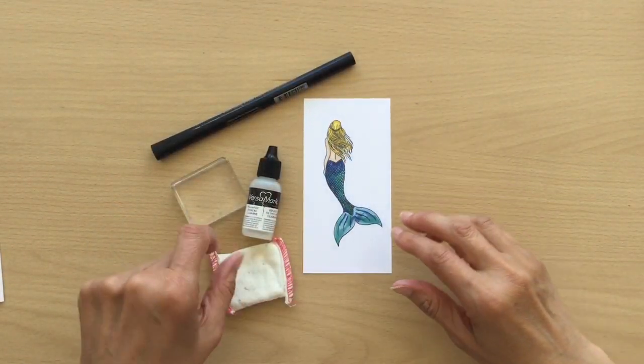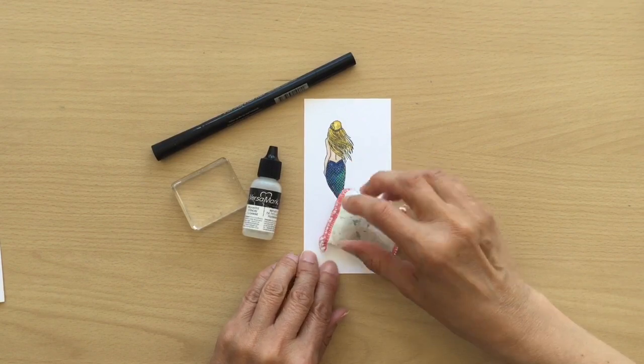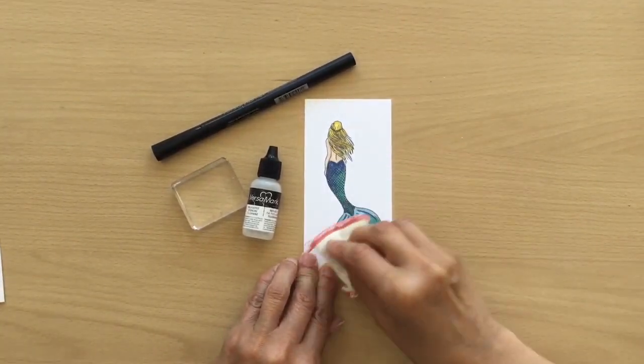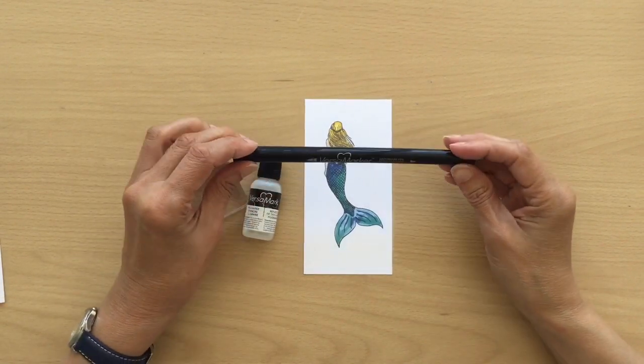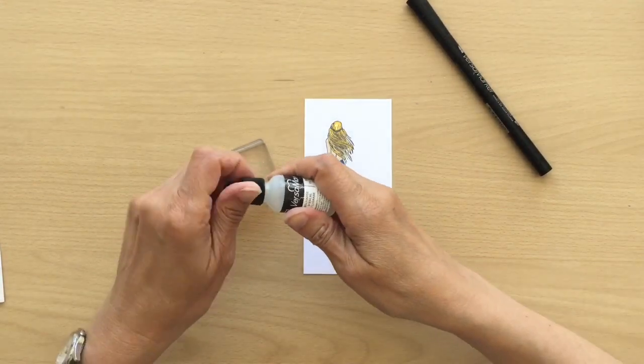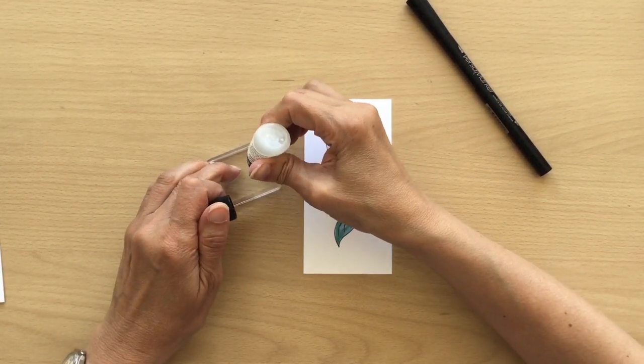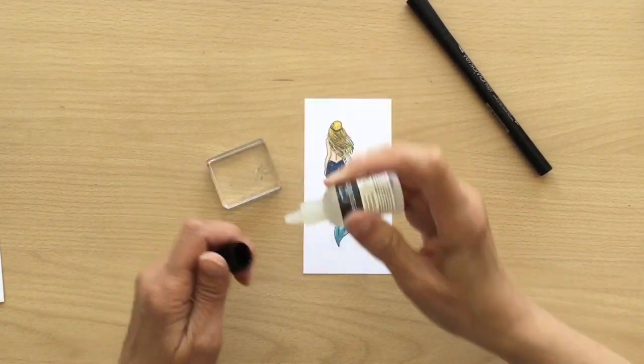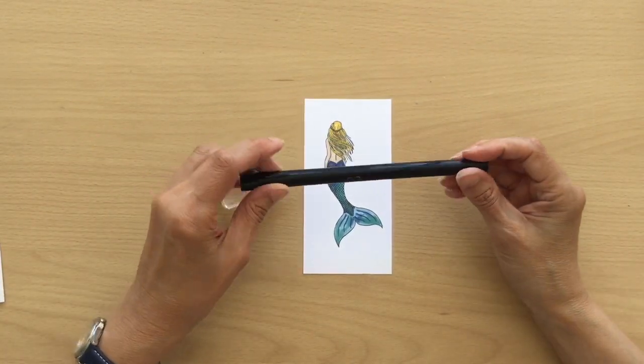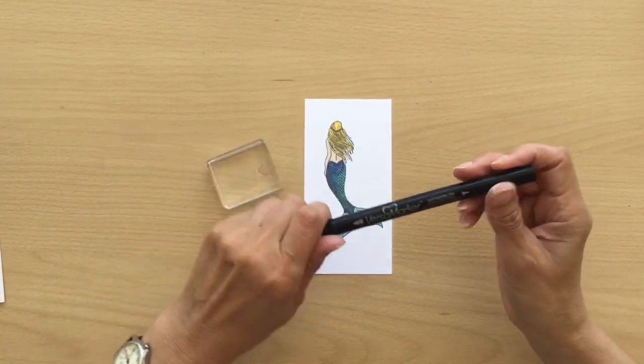Now I'm getting ready to do my mermaid's tail. I've got my embossing buddy. I'm just going to go all over my mermaid. Then I've got a Versamark pen here and I've also got some Versamark refill. I'm going to stick some of my refill onto a block, just a little bit. Because my Versamark pen, this is quite old and it hasn't got any Versamark left in it. So I just dip it in.